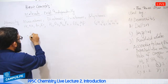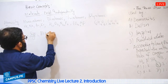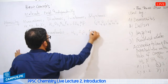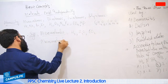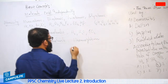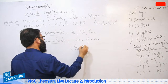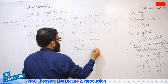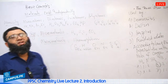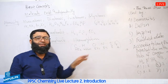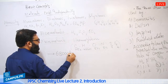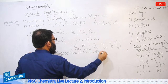Similarly, based on size, we have micro molecules like H2, H2O, CO2, and macromolecules like hemoglobin. Hemoglobin contains carbon, and its molecule is 68,000 times heavier than a hydrogen atom. Students should be prepared with the formula of hemoglobin, especially for PPSC exams.